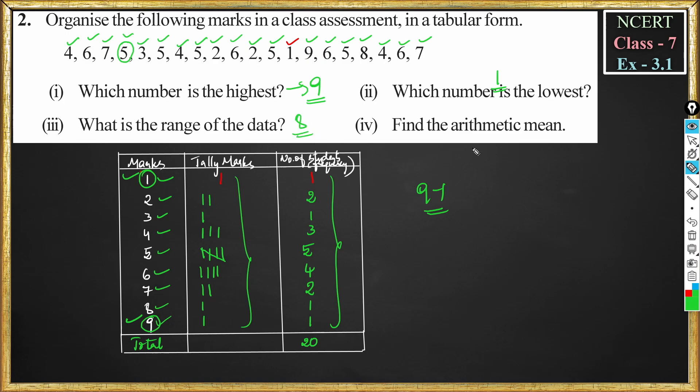Now we are asked to find arithmetic mean. Arithmetic mean is sum of the observations divided by number of observations. So if you add all these observations, we get total sum 100. So sum of observations is 100 divided by number of observations, which is 20. So 5 times 20 we get 100. That means arithmetic mean is 5. So for this data, arithmetic mean is 5.